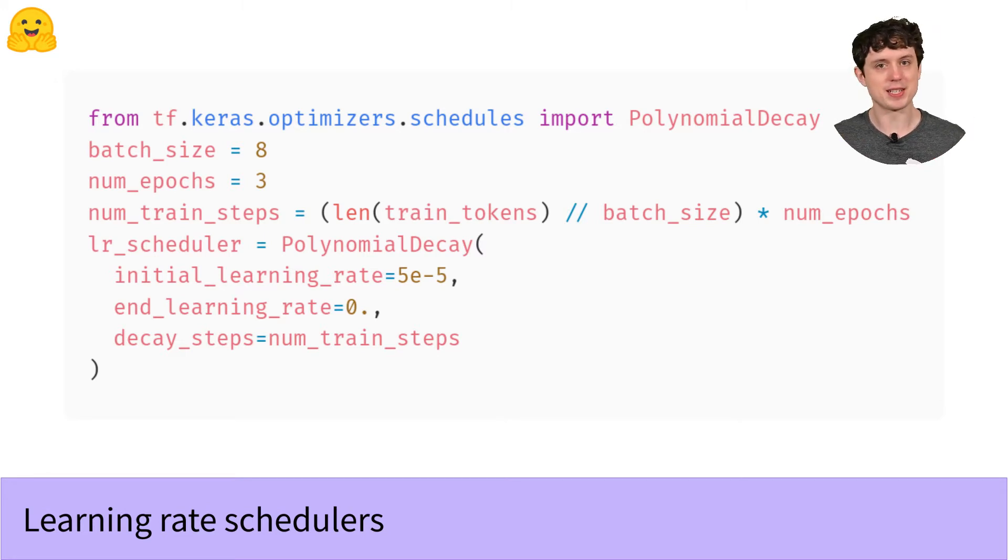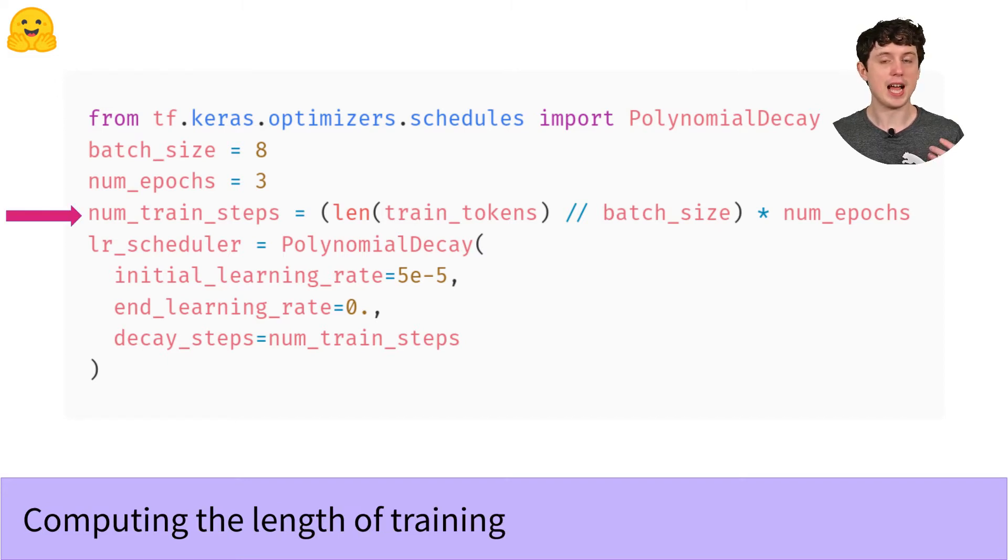That name might be intimidating, especially if you only vaguely remember what a polynomial is from math class, so I'll show you what that decay looks like in a second. But first we need to tell the scheduler how long training is going to be, so that it decays at the right speed. And that's what this code here is doing.